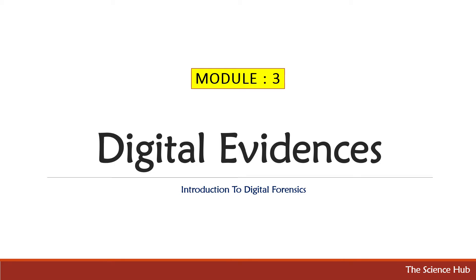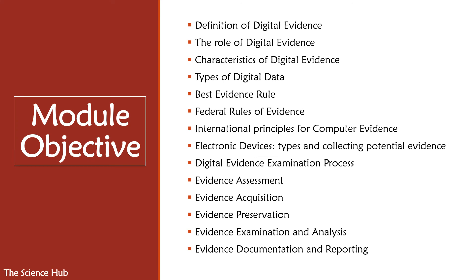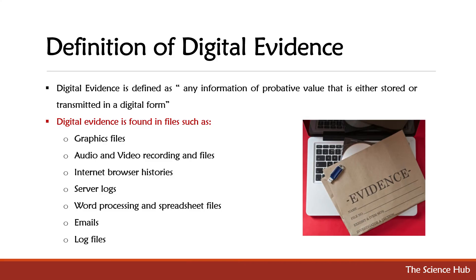Hello guys, welcome to the Science Hub. In this Module 3, we are going to study about digital evidence. The module objectives include: definition of digital evidence, the role of digital evidence, characteristics of digital evidence, types of digital data, best evidence rule, lateral rules of evidence, international principles for computer evidence, electronic devices — types and collecting potential evidence — and the digital evidence examination process.